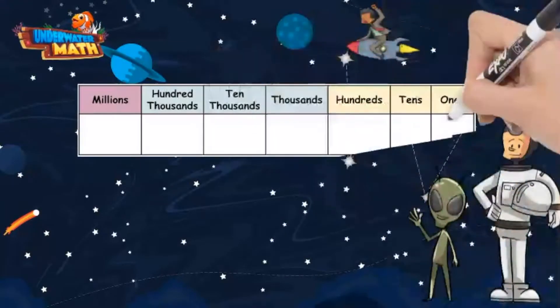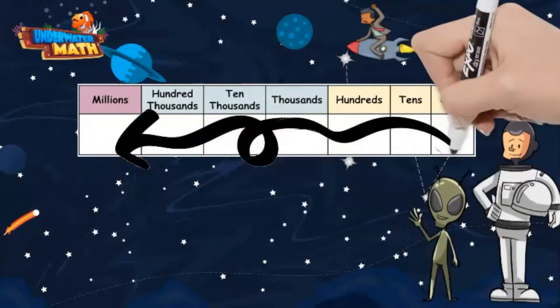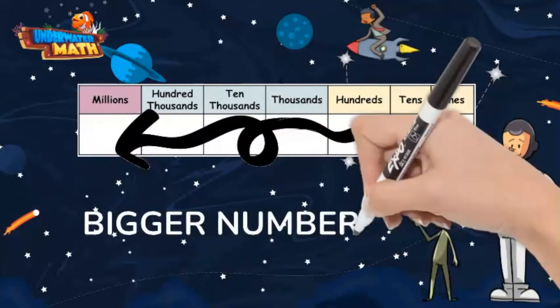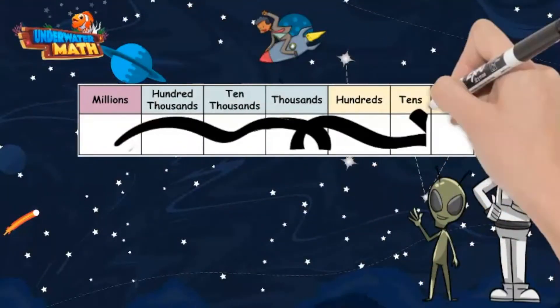First, let's look at a place value chart. As you move from right to left on the chart, or from ones to millions, the numbers get bigger. If you move in the other direction, numbers get smaller.